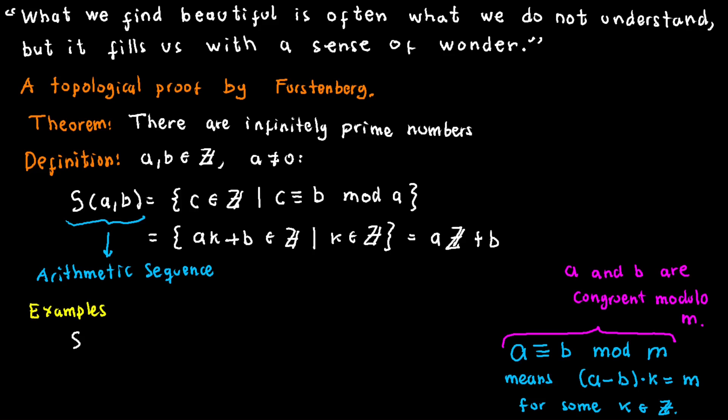Consider S(3,0), which by definition consists of all multiples of 3: negative 6, negative 3, 0, 3, 6, and so forth.